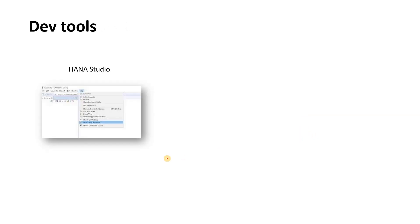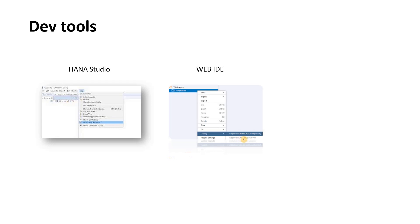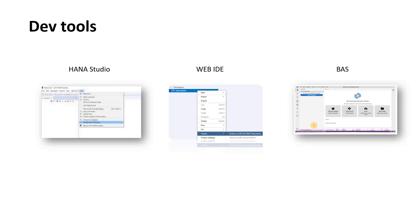As far as dev tools are concerned, earlier we had HANA Studio; now we have Web IDE, which we will be using in this course, and Business Application Studio for cloud. HANA Studio is no longer advised because it is deprecated. If you have an on-prem system, use Web IDE; if you have a cloud system, use Business Application Studio. These are the two tools going forward.